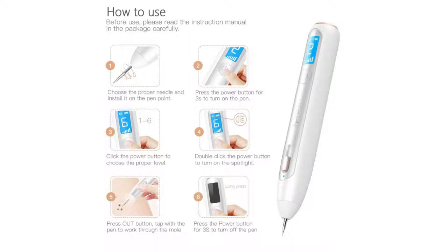First of all, please take out the pane table. 3 seconds — step 3. Click the power button to choose the power lane. 4. Double click the power button to turn on the spotlight. 5.